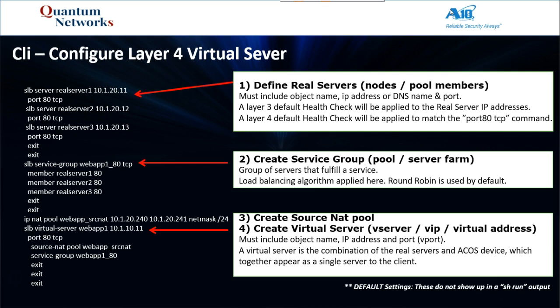Step three: create your source NAT pool, often called a NAT or SNAT. You could also route here. These decisions around routing and how you NAT need to be decided near the beginning of the conversation, near the beginning of the project — those are architectural design decisions. I typically will use a NAT/SNAT scenario most of the time. There are times when I will route directly, but those are more specific use cases and that's a whole different discussion, a whole different video.